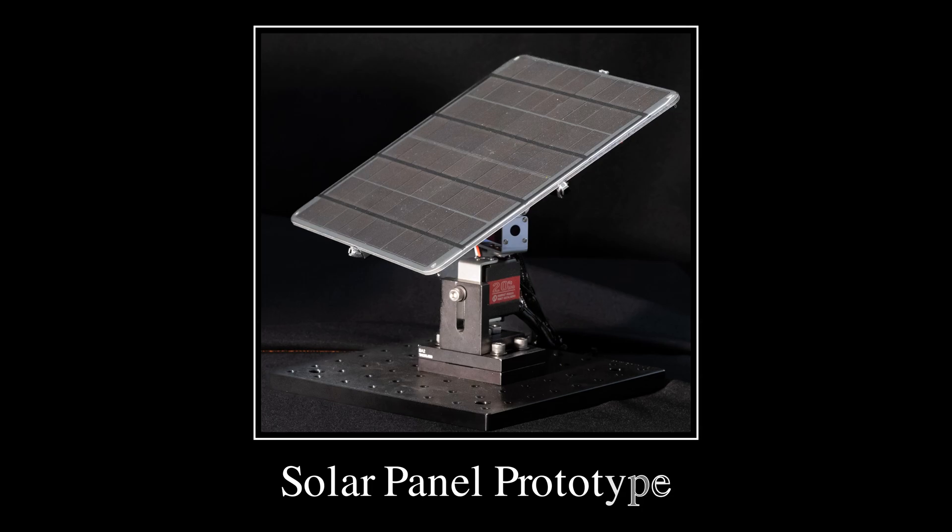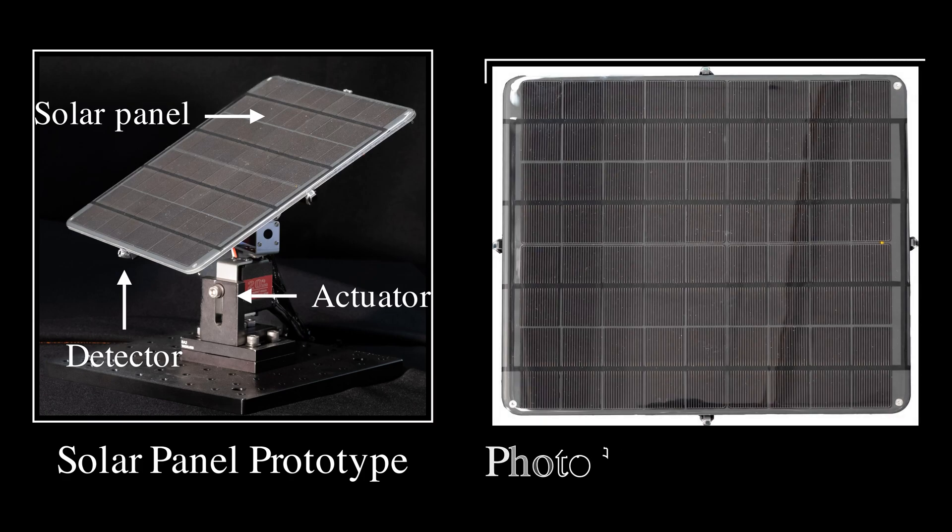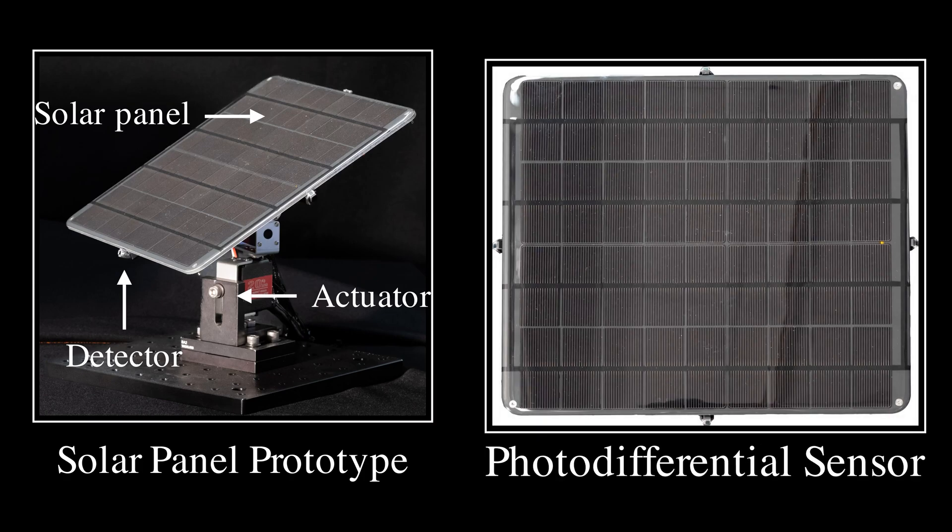Let's see how this works in practice. Here we have a prototype solar panel system. It consists of three main components: the solar panel itself, the photodetector that measures directional irradiance, and an actuator that adjusts the panel's orientation toward the optimal direction. The photodetectors are mounted on the full side of the panel, each tilted at a sufficiently large angle to capture the directional irradiance.